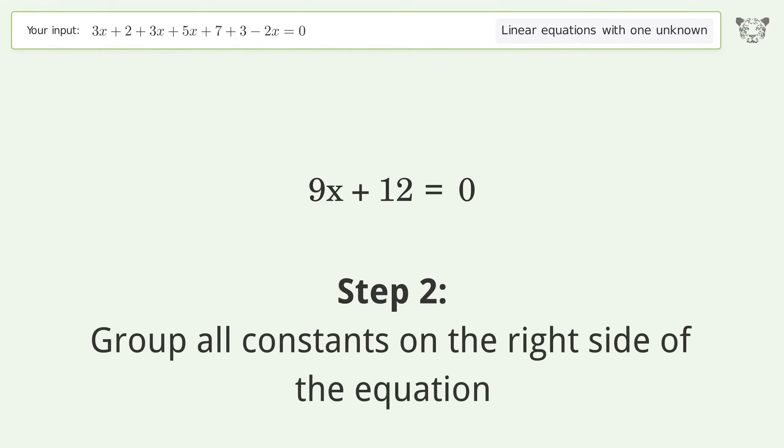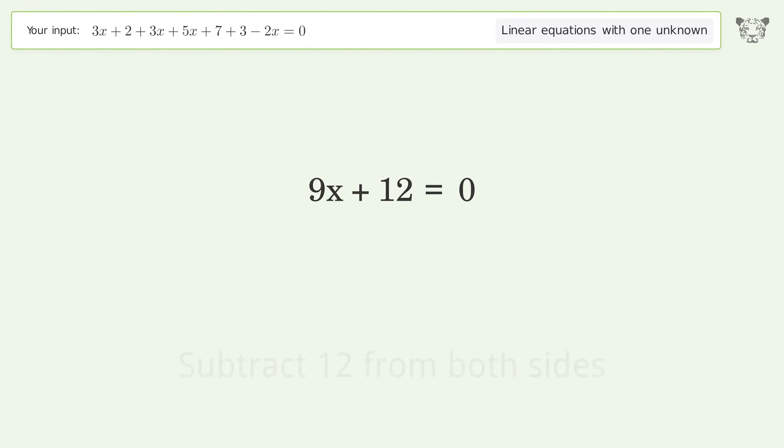Group all constants on the right side of the equation. Subtract 12 from both sides. Simplify the arithmetic.